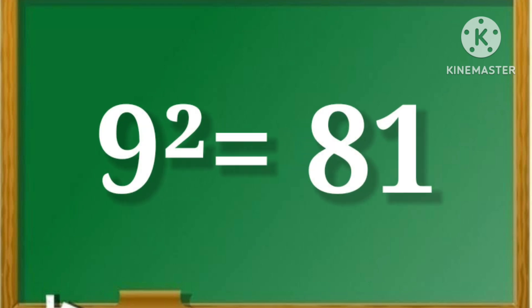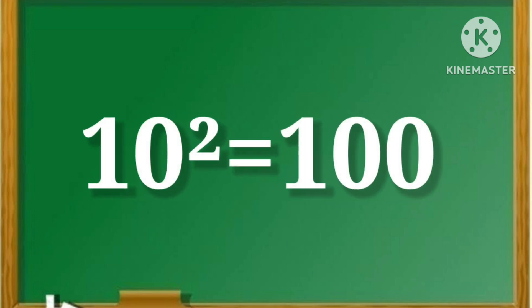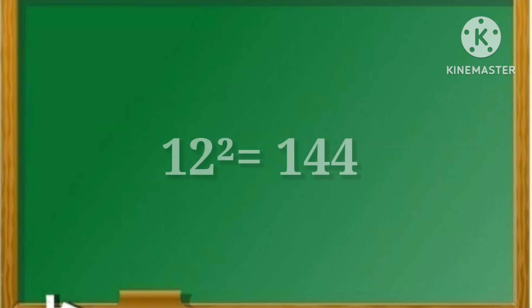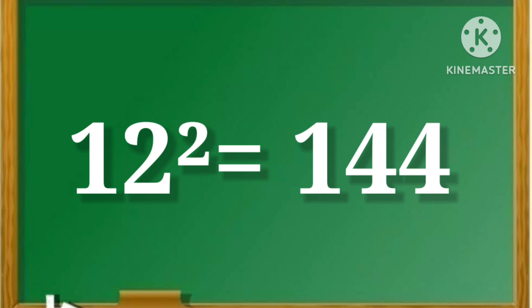9 square is equal to 81. 10 square is equal to 100. 11 square is equal to 121. 12 square is equal to 144.